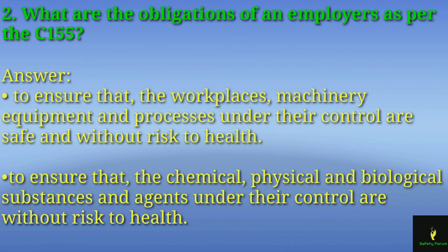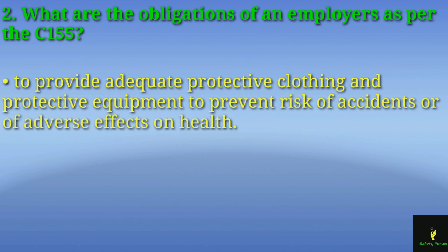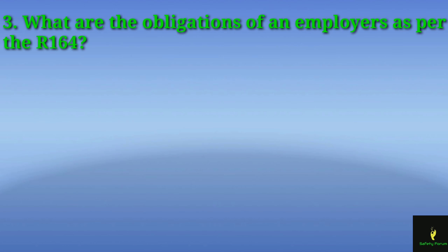Employers must also ensure that chemical, physical, and biological substances and agents under their control are not posing any risk to the health of workers. They must also ensure they provide adequate protective clothing and protective equipment to prevent risk of accidents, injuries, or any adverse effects on workers' health.